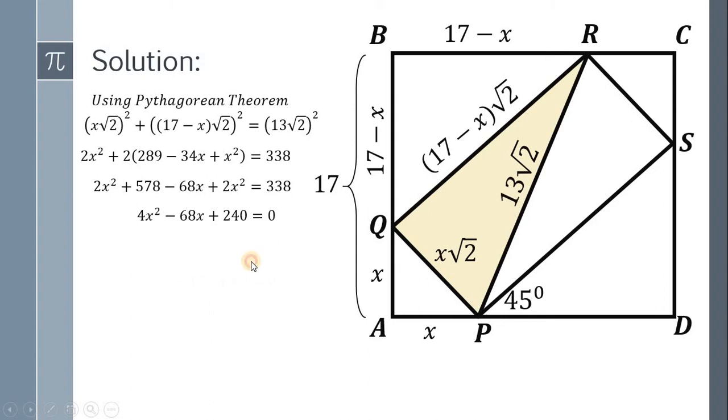Divide both sides by 4 and we get X² minus 17X plus 60 equals 0. Now factor, we have (X - 12)(X - 5). Using zero product property, it follows that X - 12 equals 0 or X - 5 equals 0. It follows that X equals 12 or X equals 5.